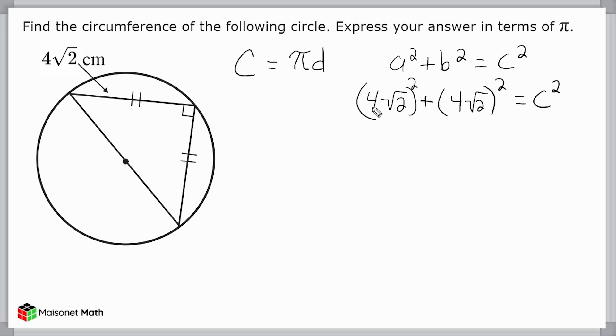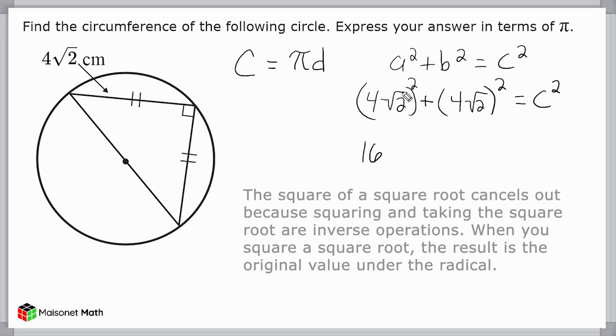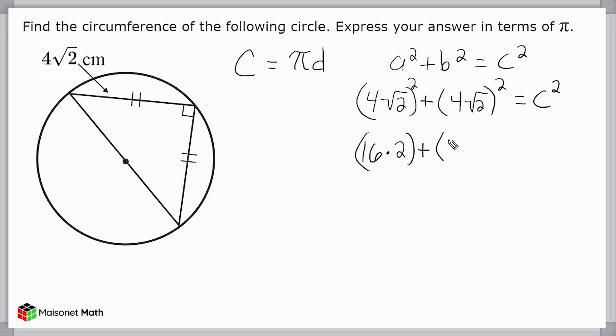Now, what we're going to do is take the number outside of our radical, this 4, and square that. 4 times 4 is 16, and whenever squaring something underneath the square root symbol, those two things cancel completely out, leaving you with 2. So really, this is 16 times 2. And because we have the same thing over here, we're also going to get 16 times 2, which equals c².